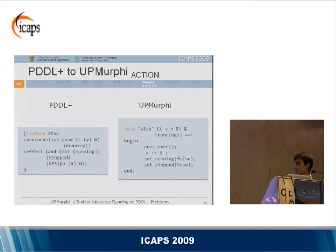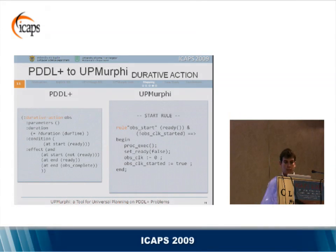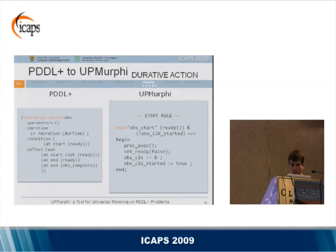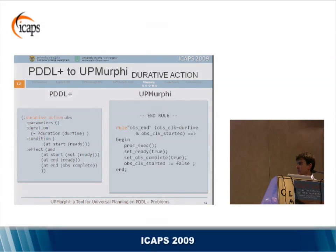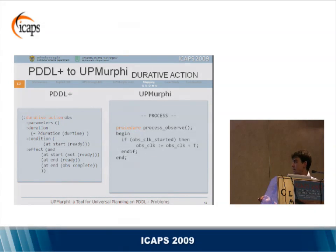For durative actions, we model them according to the start-process-stop model proposed by Fox and Long. We have first a rule start that begins the period of continuing change and initializes the clock, then a rule that terminates the action and sets the at-end effects of the durative action in the body of the rule, and in the middle we have the process that increments the clock.